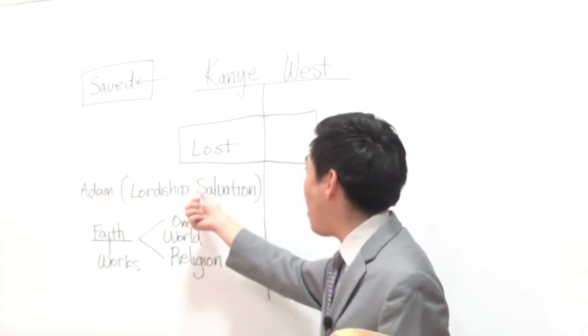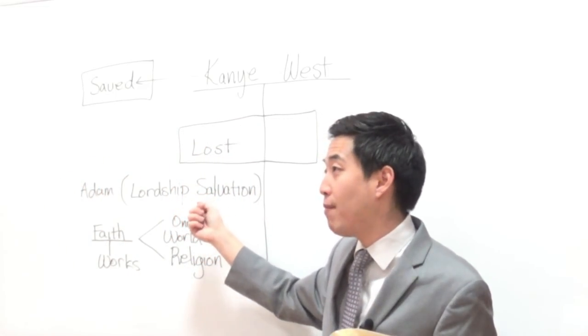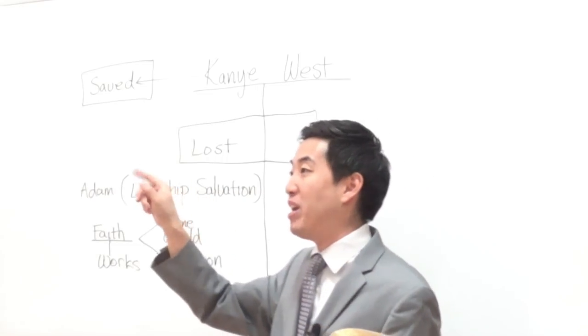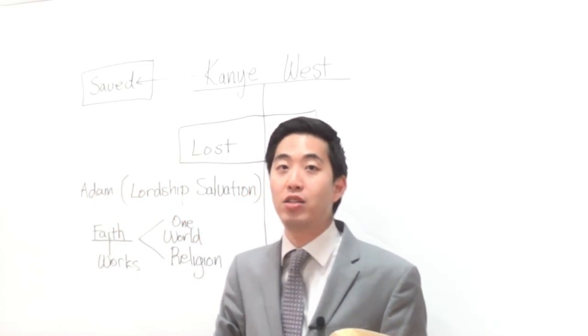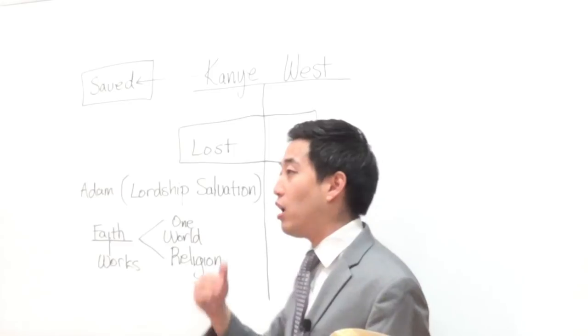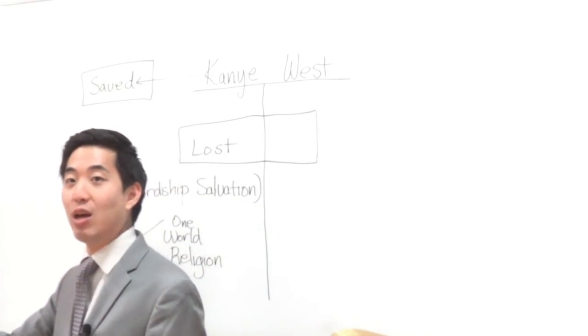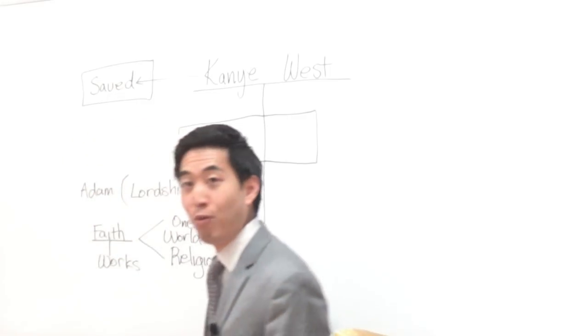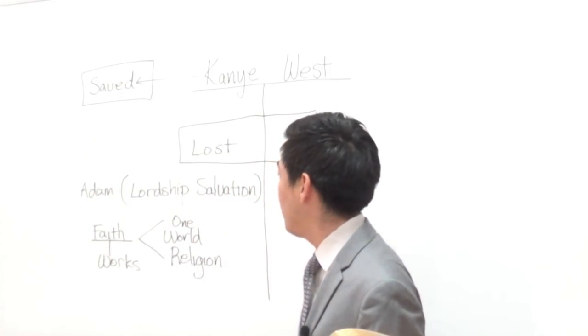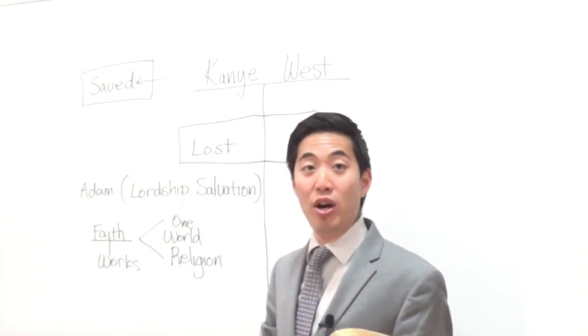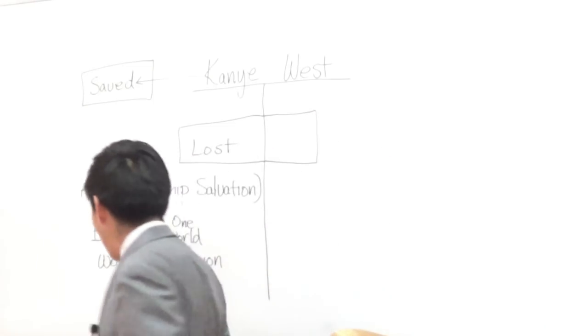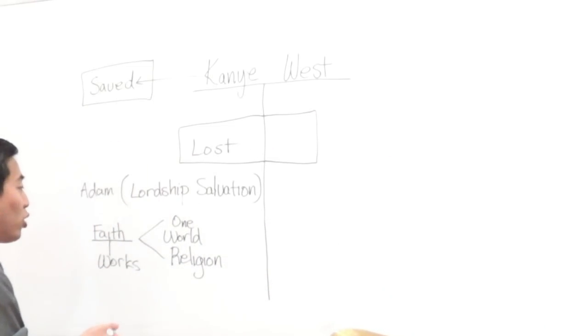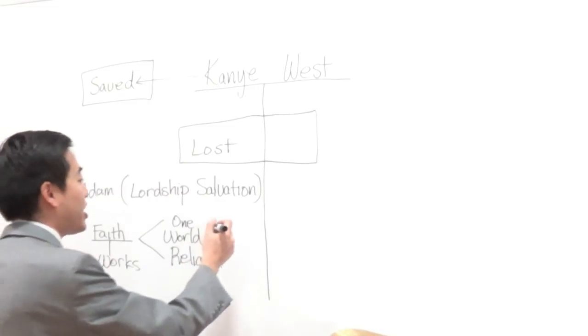Lordship salvation, that's a Calvinist doctrine on tulip. The five points of Calvinism. P in tulip, perseverance of the saints. In other words, if you're truly a saved saint of God by grace, then we're going to see that perseverance out of your life. What if Kanye doesn't persevere? See that? So that's what Satan's going to use. So then, you know what's even worse? It's not just one world religion. It's the world system itself.